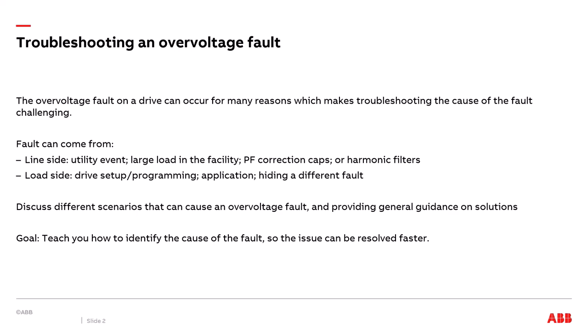Unfortunately, there's no easy answer when drives trip on an overvoltage fault, because the cause can come from two different sides of the drive — the line side or the load side. Line-side examples include an upstream utility event, a parallel large load in the facility, or power factor correction caps and harmonic filters. Load-side causes include incorrect drive programming, a mechanical problem with the application, or the overvoltage fault masking a different fault. This presentation covers different scenarios and provides general guidance on solutions to identify the cause and resolve the fault as quickly as possible.